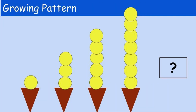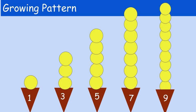Who loves ice cream? I sure do! Check out this growing pattern and how many scoops there are. Pause the video and figure out what the missing picture is. If you put nine scoops of ice cream on top of your ice cream cone then you are correct. Did you notice that this picture has a rule? The rule is that we add two scoops of ice cream each time. So in the first picture it's one, one plus two is three, three plus two is five, five plus two is seven, and seven plus two is nine. That's your growing pattern.